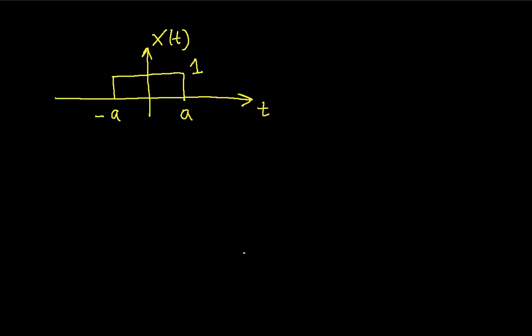This turns out to be a very useful Fourier transform because it tells you, for example, what the impulse response of an ideal low-pass filter will be. And it turns out that there's a couple interesting things there.